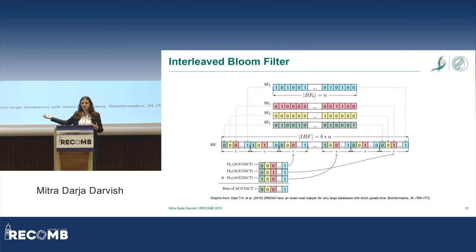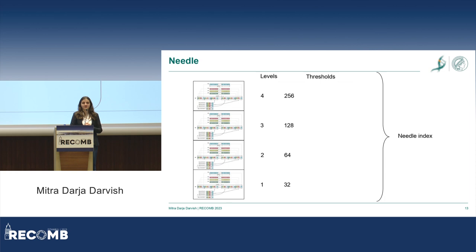The interleaved bloom filter just gives you a binary answer about whether k-mers are present or not. To capture expression levels, we use multiple interleaved bloom filters and associate each with a certain range of count values.